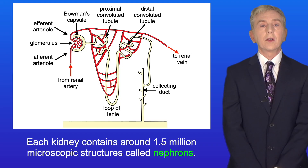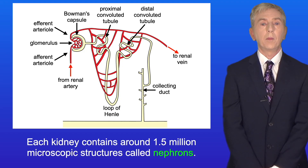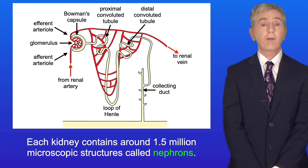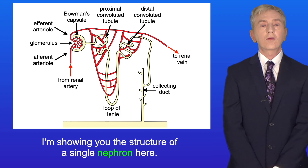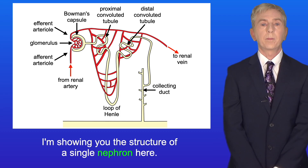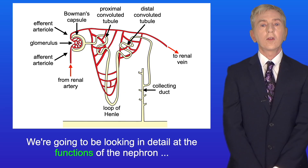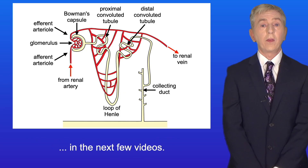Each kidney contains around 1.5 million microscopic structures called nephrons. We're going to be looking in detail at the functions of the nephron in the next few videos.